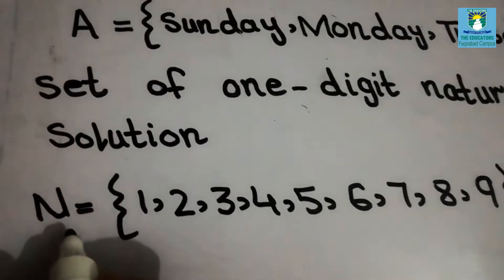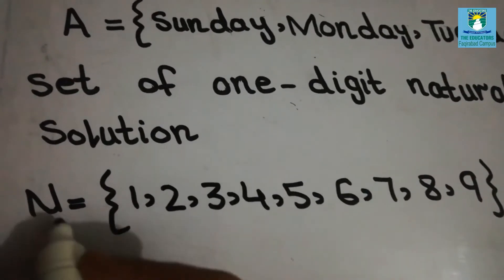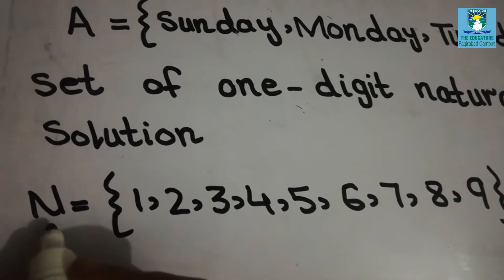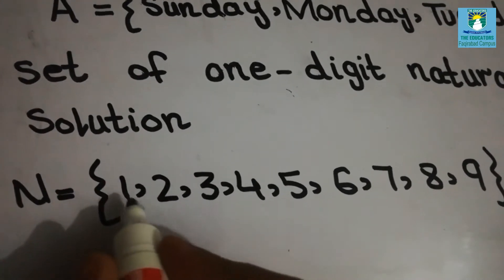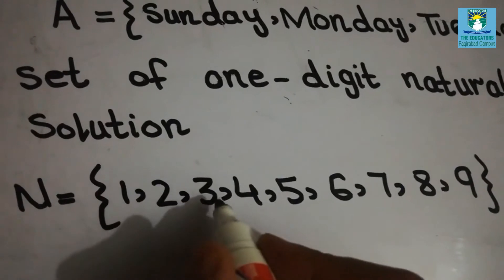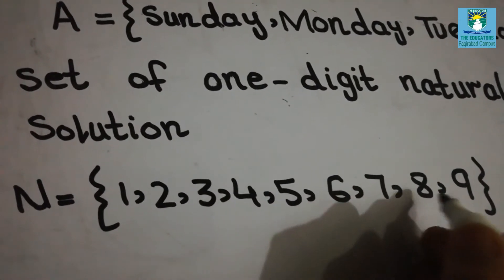Students we know that we denote natural numbers with capital N. And natural numbers start from 1, 2, 3, 4, 5, 6, 7, 8, 9.